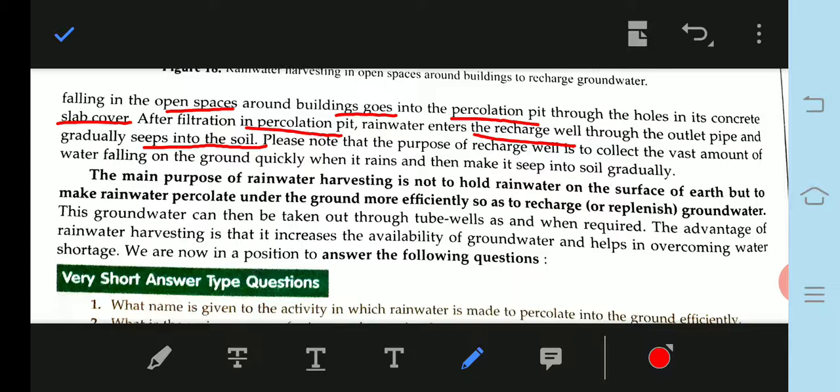When it rains, the water is filled through the outlet pipe and seeps into the soil gradually. Please note that the purpose of the recharge well is to collect the vast amount of water falling on the ground quickly and then make it seep into the soil gradually.